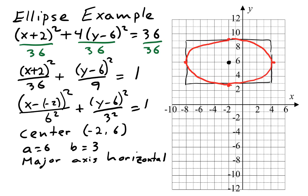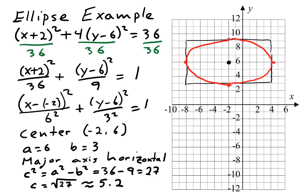To show the foci, we need the distance C from the center to the focus. C is part of a Pythagorean relationship with A and B: B squared plus C squared equals A squared, so C squared equals A squared minus B squared. That is 36 minus 9, which is 27. C is the square root of 27, which is about 5.2. We go 5.2 spaces away from the center on each side to get to the foci. The foci are always on the major axis — which here is horizontal — so the foci are to the left and right of the center. The foci are always inside the ellipse; if you find yourself drawing foci outside, go back and check for a mistake.